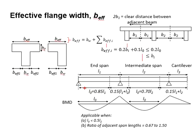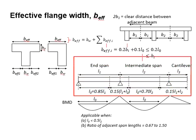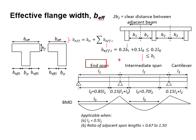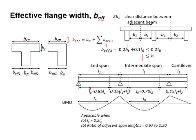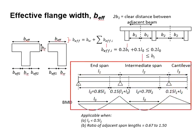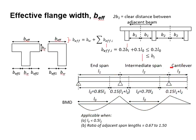L_node varies among different conditions of the beam, as presented in this diagram — for the end span, for the intermediate span, and for the cantilever. The equations are given here. It is noted that this diagram is applicable when L3 is less than half of L2, and the ratio of adjacent span length is within 0.67 to 1.5.